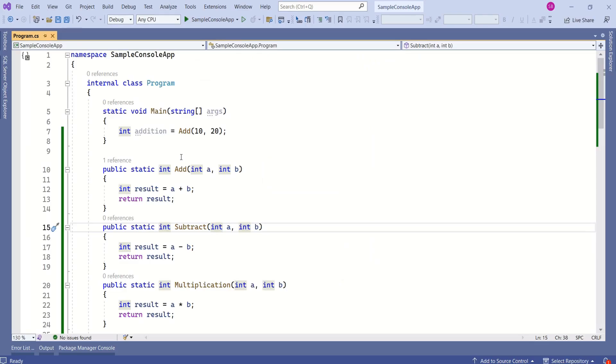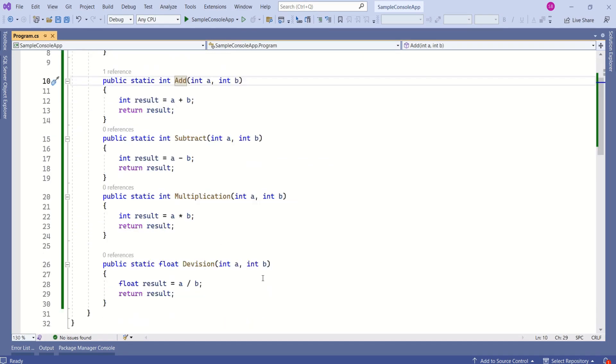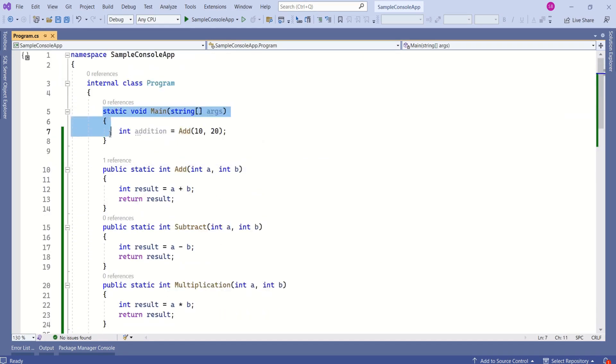Let's understand JIT compilation with this simple application. Here, I have written a program. I have four methods: Addition, Subtraction, Multiplication, and Division. Here, from this main method, I am calling this Add method.